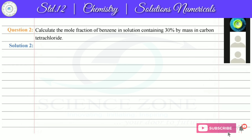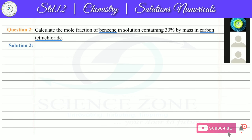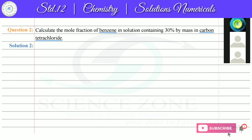Question 2: Calculate the mole fraction of benzene in a solution containing 30% by mass benzene in carbon tetrachloride. Again, we have a solution of benzene and carbon tetrachloride. Benzene is the solute and carbon tetrachloride is the solvent. The benzene content is 30% by mass.